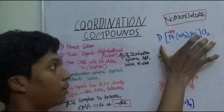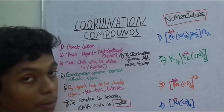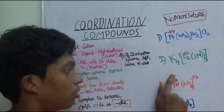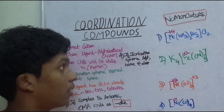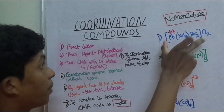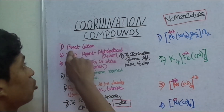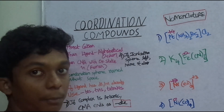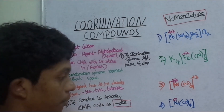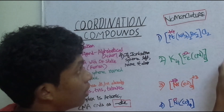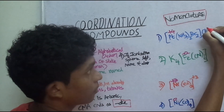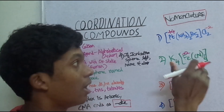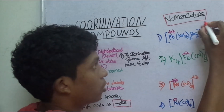First, we will start with this example from our previous videos. First, find the cation. Here is the cation. Cl₂ is minus 2 — Cl minus, so Cl₂ is minus 2. If it is minus 2, the metal will be plus 2.